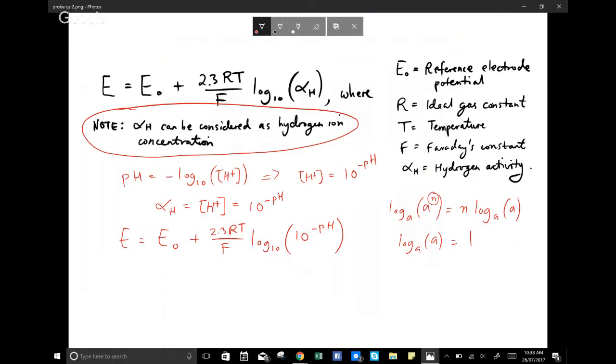So probably good to revise your logs. So essentially, this term here is saying, what do I need to raise A to the power of so that I would get A? So what number would I have to raise a number by to get the same number? And the answer to that is one.